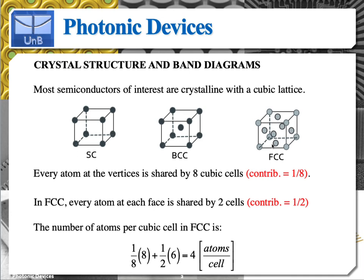If we want to estimate how many electrons you have per unit cell, we can go about the following line of thought. Every atom at the vertices is shared by eight cubic cells — four below and four above. So if you consider this atom here, it is shared by eight cells, meaning the contribution of such an atom is one-eighth. In face-centered cubic, every atom located right at the face is shared by two cells, one on each side, so the contribution of the atoms positioned at the faces is one-half only.